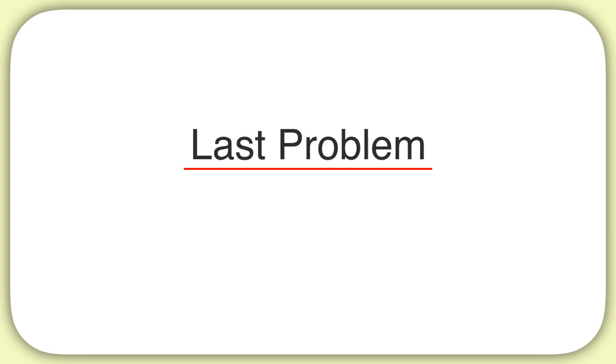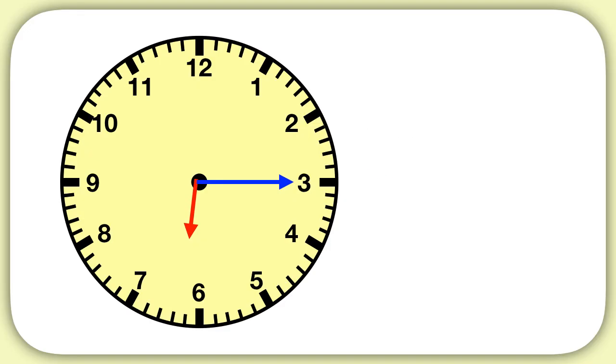Now here's your last problem to practice with. What time does this clock show? Well, my hour hand is between the 6 and the 7, so we write 6 for our hours. Then for our minutes, we remember that the 3 represents 15 minutes. So our time is 6:15.